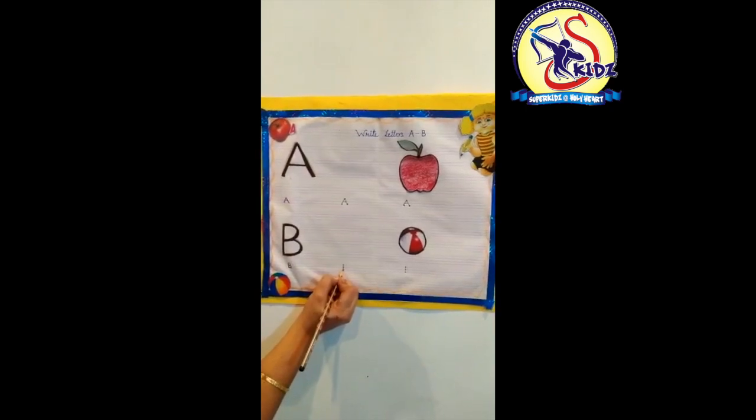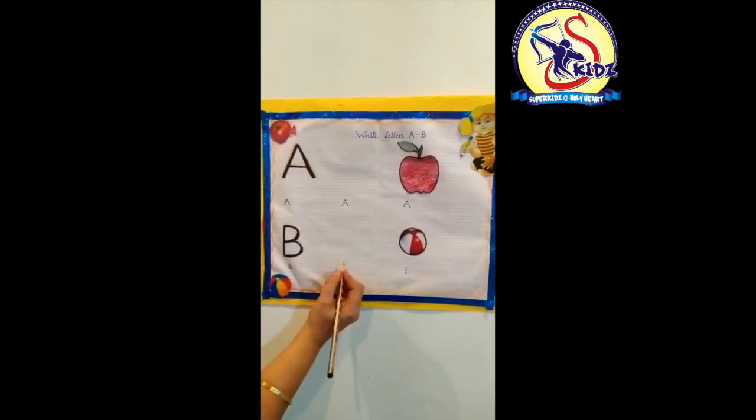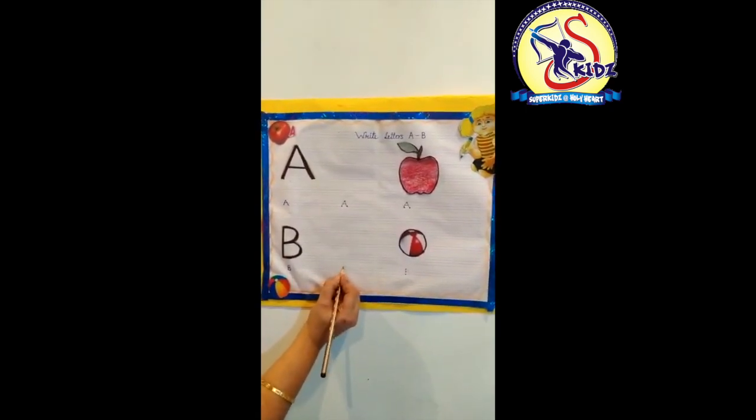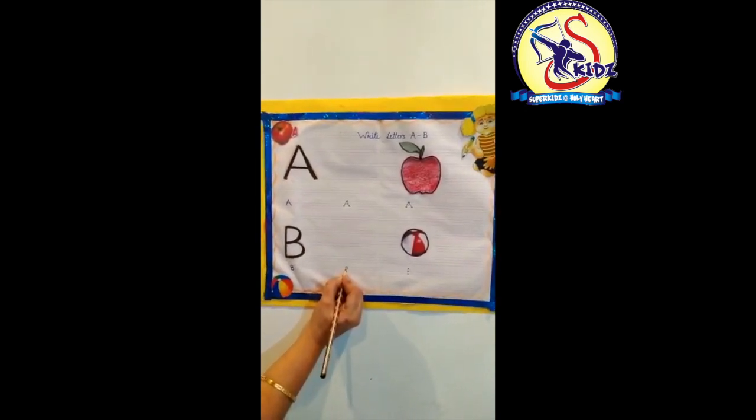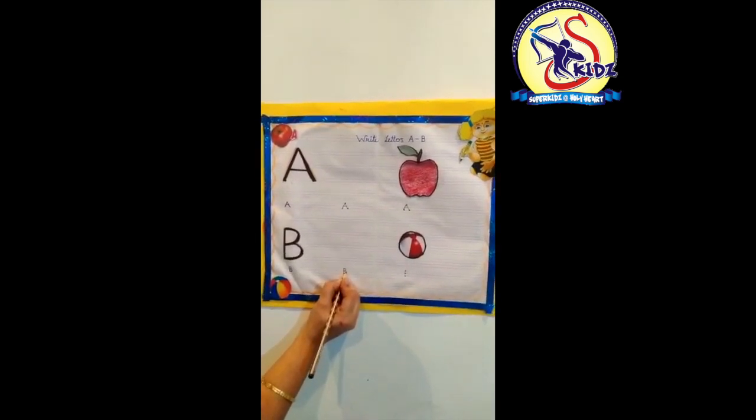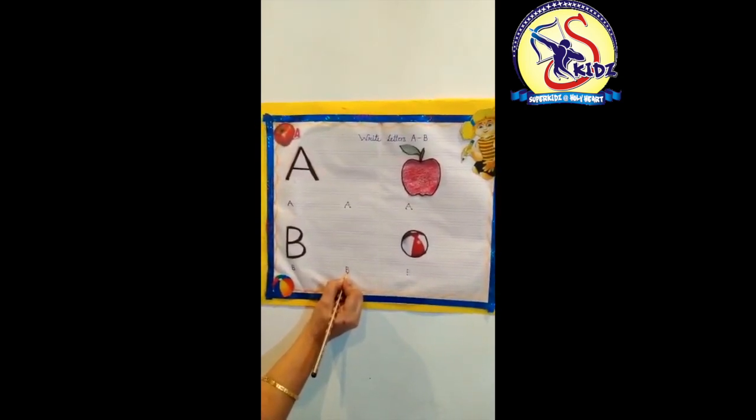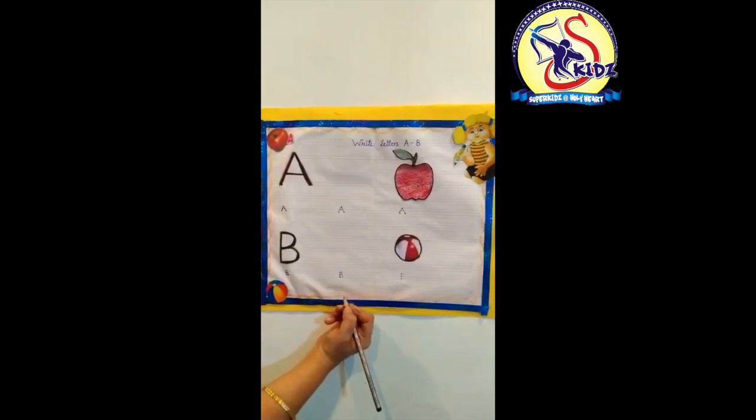Make a standing line. Then we will make a curve joining this dot. Now again we will make a curve. And this is letter B.